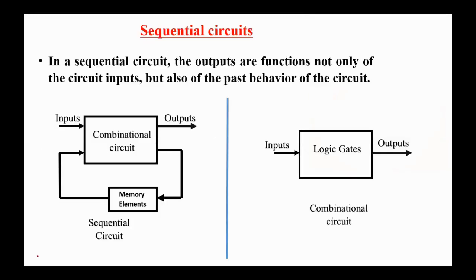We already know that logic circuits are broadly classified into two types: combinational logic circuits and sequential logic circuits. We got familiar with different combinational logic circuits such as adders, code conversion circuits, comparator circuits, decoders, encoders, multiplexers, demultiplexers, and programmable logic devices such as ROMs, PALs, and PLAs.